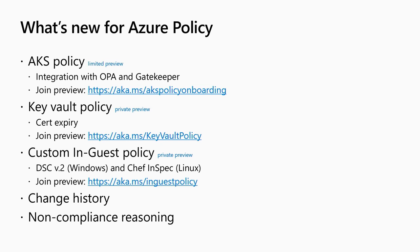Let me quickly touch on change history and non-compliance reasoning. For change history, we're capturing all changes that happened to resources in your Azure environment, and within the policy experience you can see all changes in the last 14 days with a diff view of before and after state — also available in your activity log. The last item is compliance reasoning: a lot of customers were saying they got non-compliant but didn't know what field actually violated. Non-compliance reasoning tells you the specific field that violated, what the expected value was, and what the current value was, shown for all non-compliant resources in compliance details.